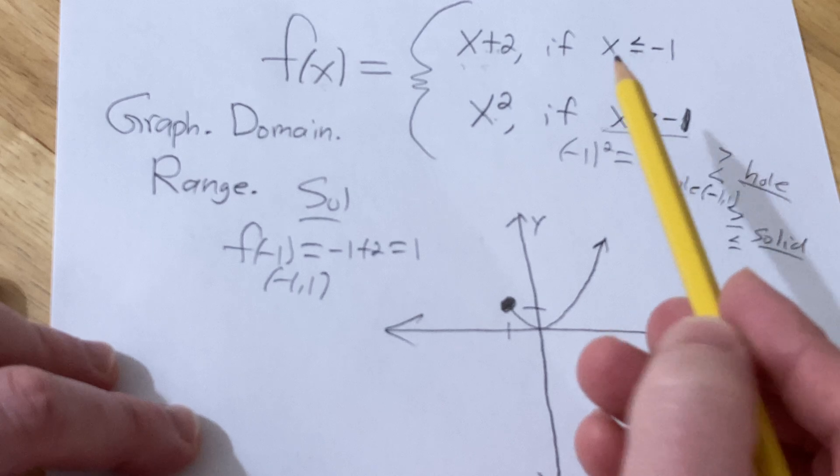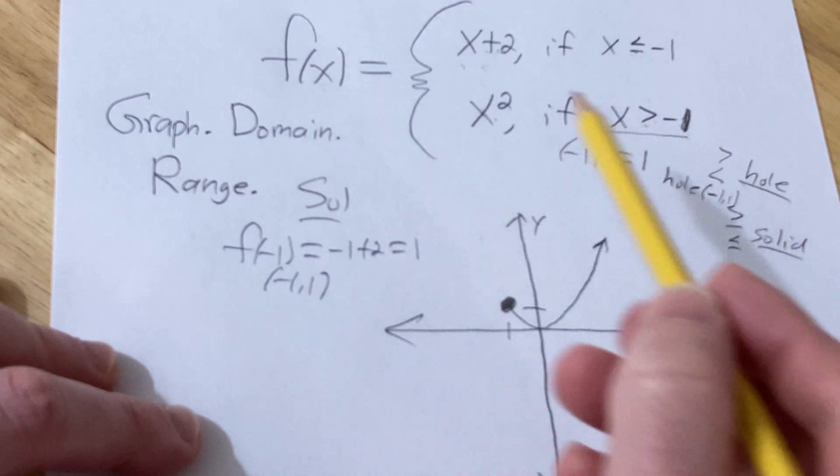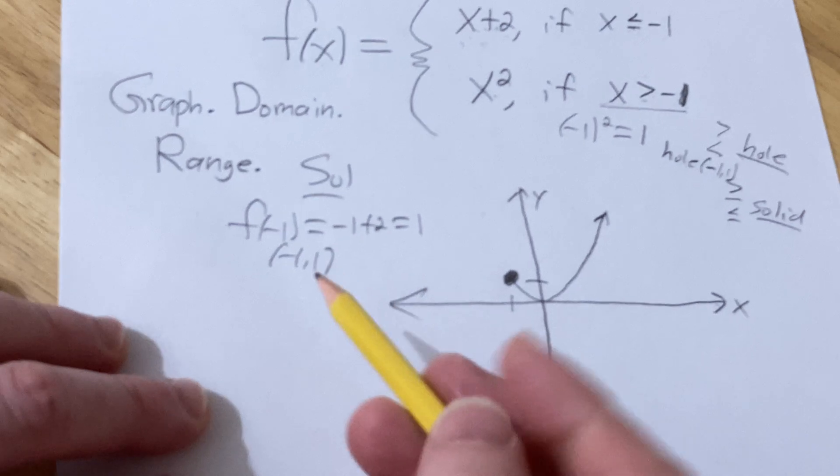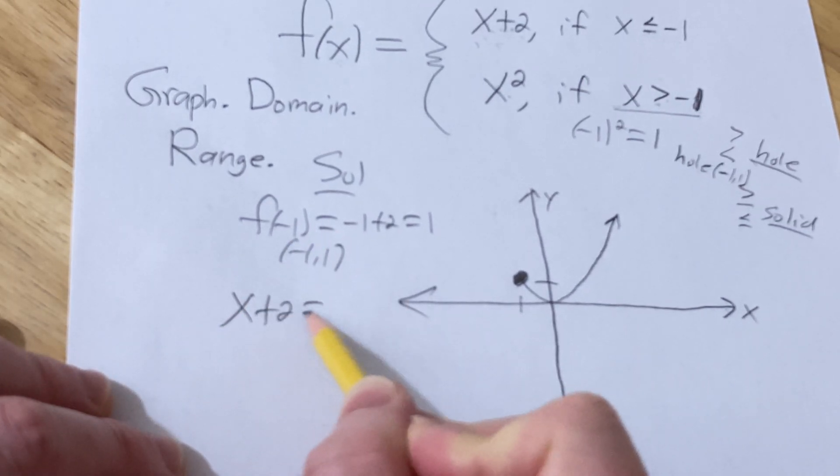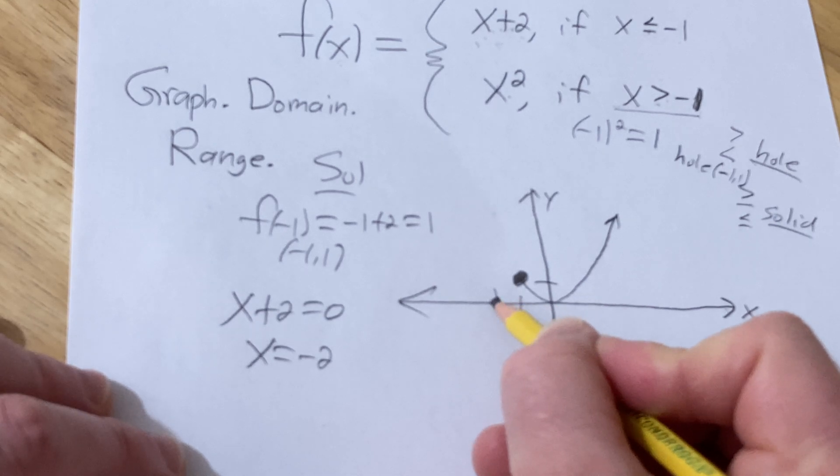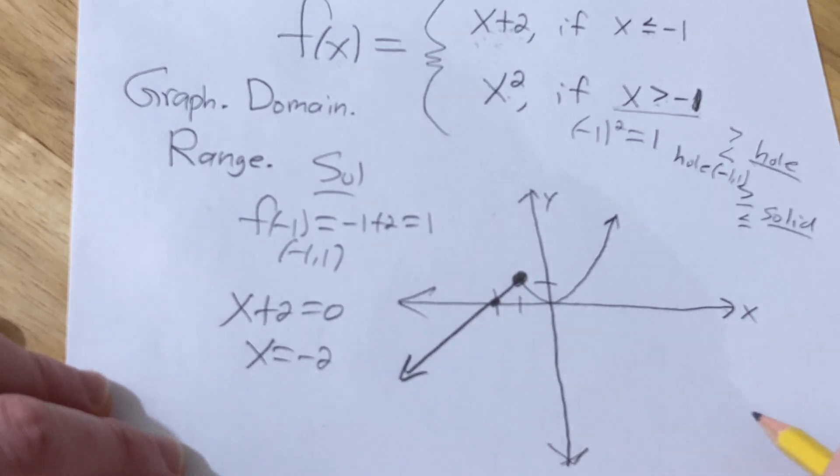And we just have to find the x-intercept. To find the x-intercept, you set it equal to 0, so we get x equals negative 2. So it's going to cross right here, and there's the graph.